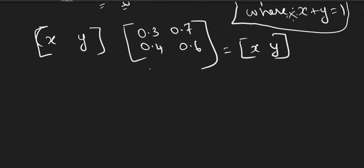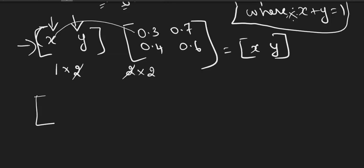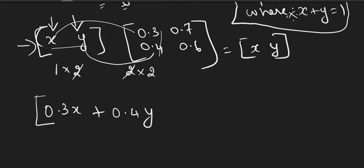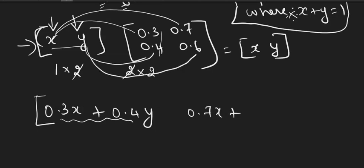We have to multiply. V is 1 row, 2 columns, and P is 2 rows, 2 columns, so the final answer is 1 row, 2 columns. The first element of V·P is X times 0.3 plus Y times 0.4. The second element is X times 0.7 plus Y times 0.6. The right-hand side is [X, Y].